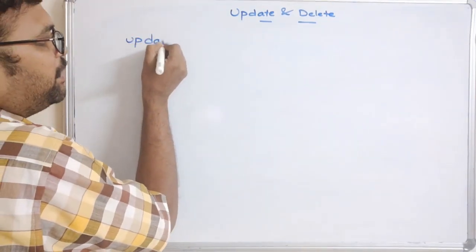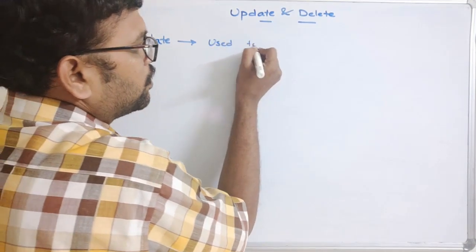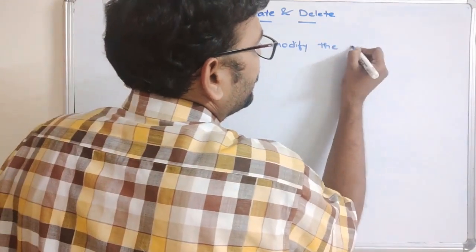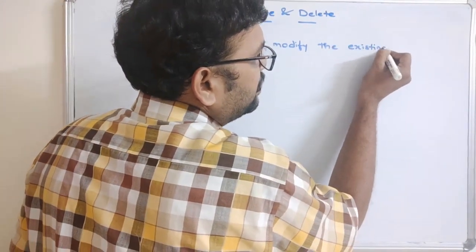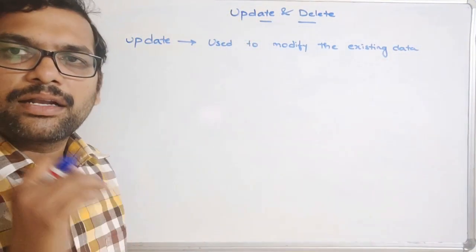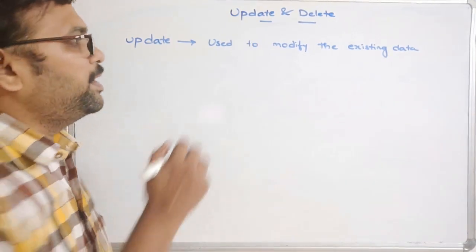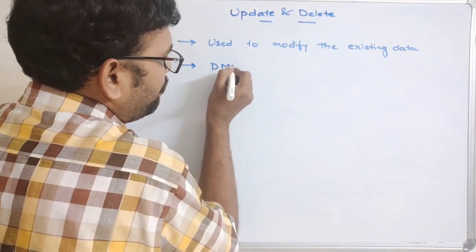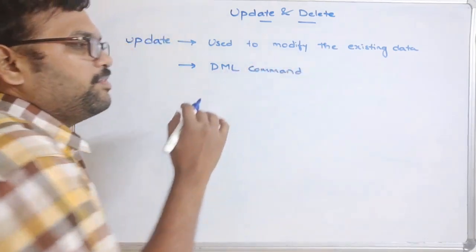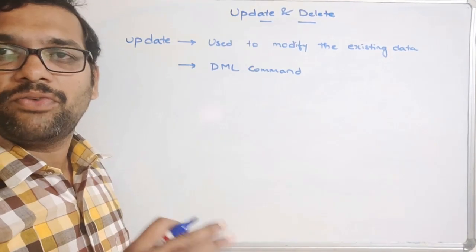The UPDATE command is used to modify existing data. There is a slight difference with the ALTER command. ALTER is a DDL command, while UPDATE is a DML command. DML commands are used to change the data of a table, whereas DDL commands change the structure of a table.